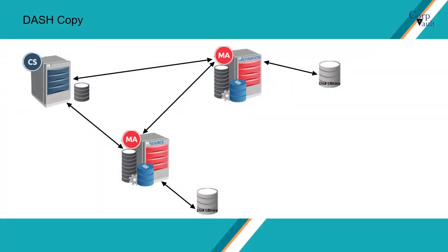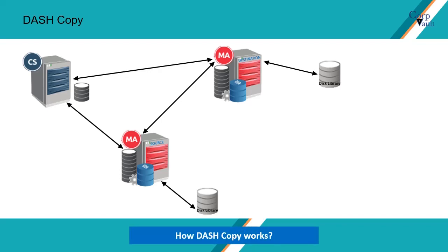Dash Copy is useful when you need to create secondary copies of deduplicated data. Dash Copy provides a fast method of copying data by transferring only the changed data to a secondary copy, ideally an offsite copy for disaster recovery. Compared to traditional copy, Dash Copy transfers only the modified data to the secondary copy.